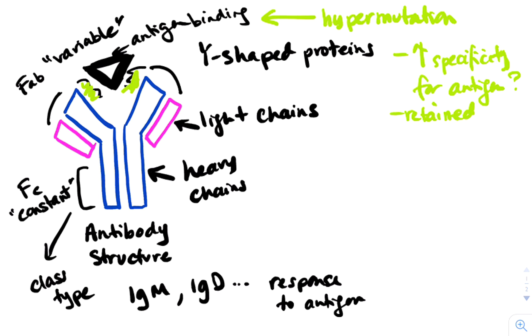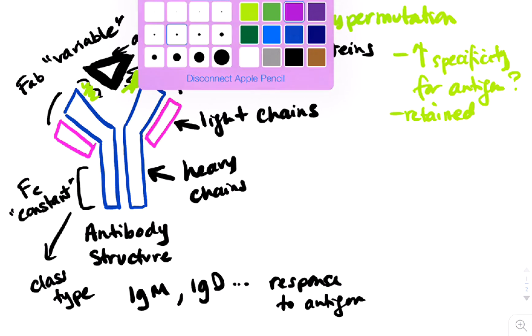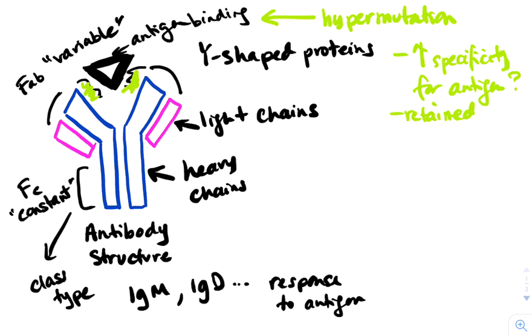We can also modify the constant portion of the antibody, and that is through class switching. In this case, you would retain the antigen binding sites, so you still have specificity for the antigen.